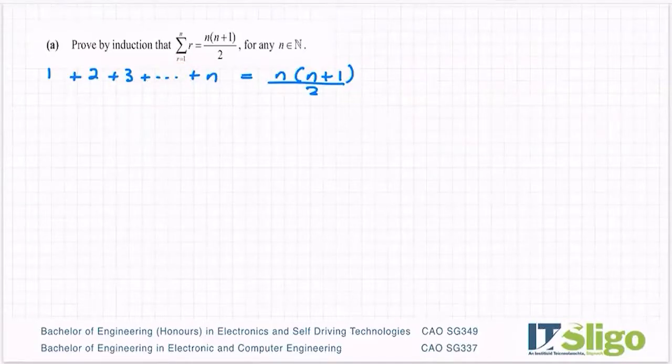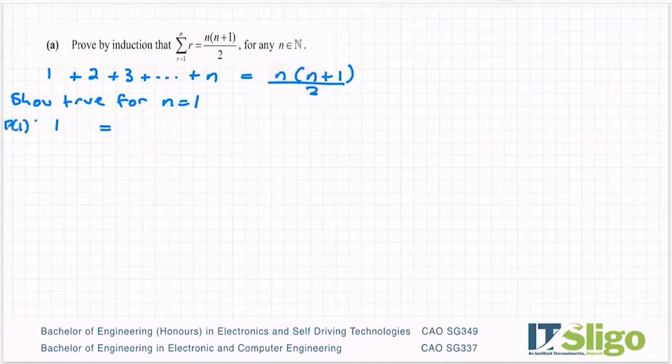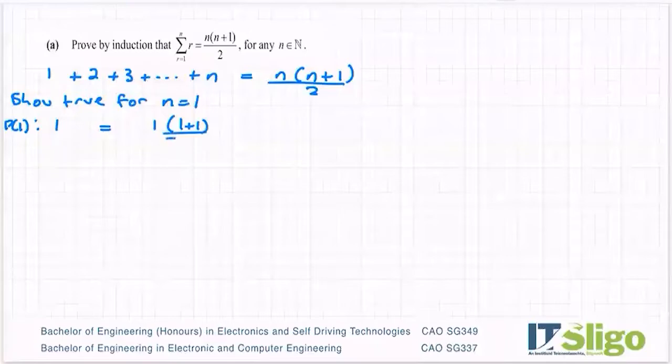So again, we prove true, show true for n is equal to 1. So my first term on this side is that 1 there. We're always showing the left hand side equals the right and I'm going to sub in 1 for n here. This is my p of 1. So 1 times 1 plus 1 over 2. And so that's true. 1 is equal to 1 is what I've shown there.